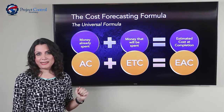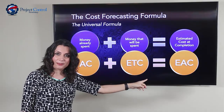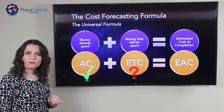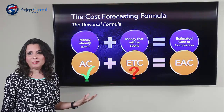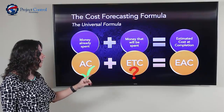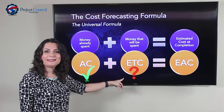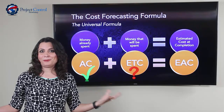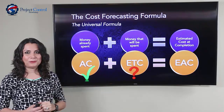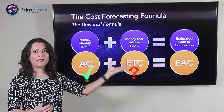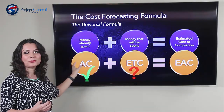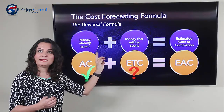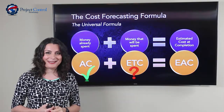We already have Actual Cost from our financial systems — that's the money we have spent. So if we can come up with the formula for ETC, Estimate to Complete, we can easily calculate EAC. It's just a matter of adding Actual Cost to our ETC. So as long as we can determine ETC, we have our EAC.